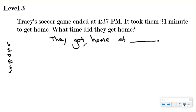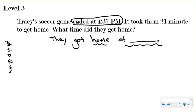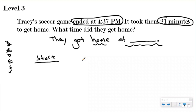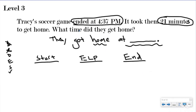I'm looking for anything about when they got home since this is a time problem. Tracy's soccer game ended at 4:37 - that's important because it's about time. It took them 21 minutes to get home. I know this is an elapsed time problem, so I want to develop my plan and label my start time, elapsed time, and end time. Here's how they try to trick you - they told you the soccer game ended at 4:37, so if you're not reading carefully, you would put 4:37 for the end time because it said the word 'end.'